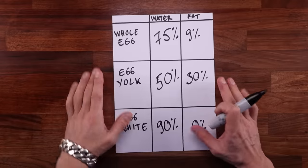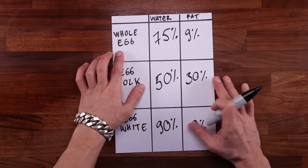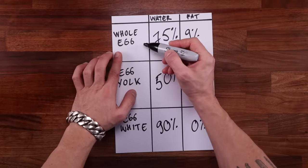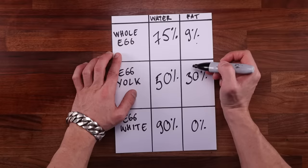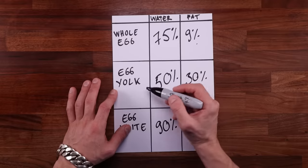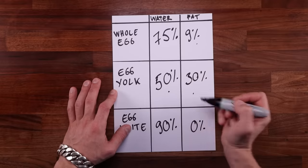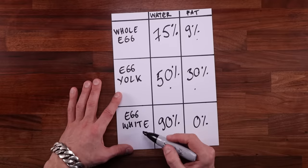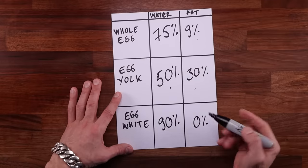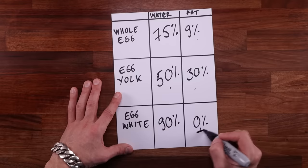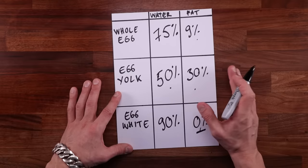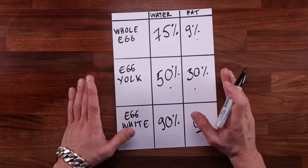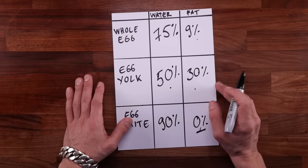Let's start with some numbers. Generally a whole egg is around 75% water and 9% fat. The yolk alone is about 50% water and 30% fat, and egg whites are around 90% water with practically no fat. These numbers will come in handy when calculating your recipe using baker's percentage — knowing this will help you adjust the amount of water and fat you add to your dough.